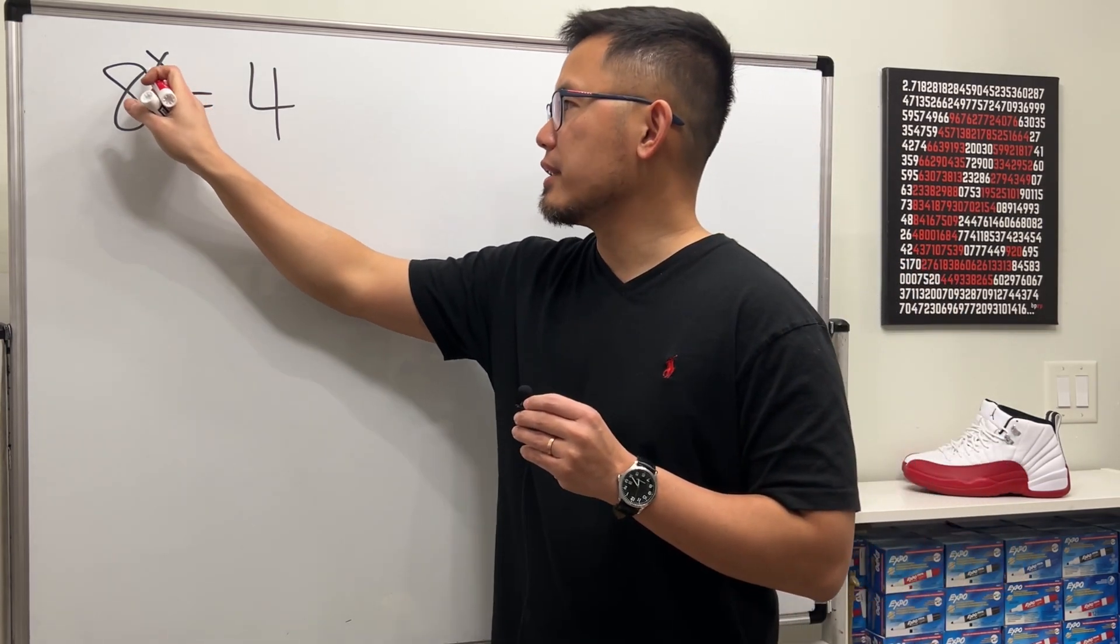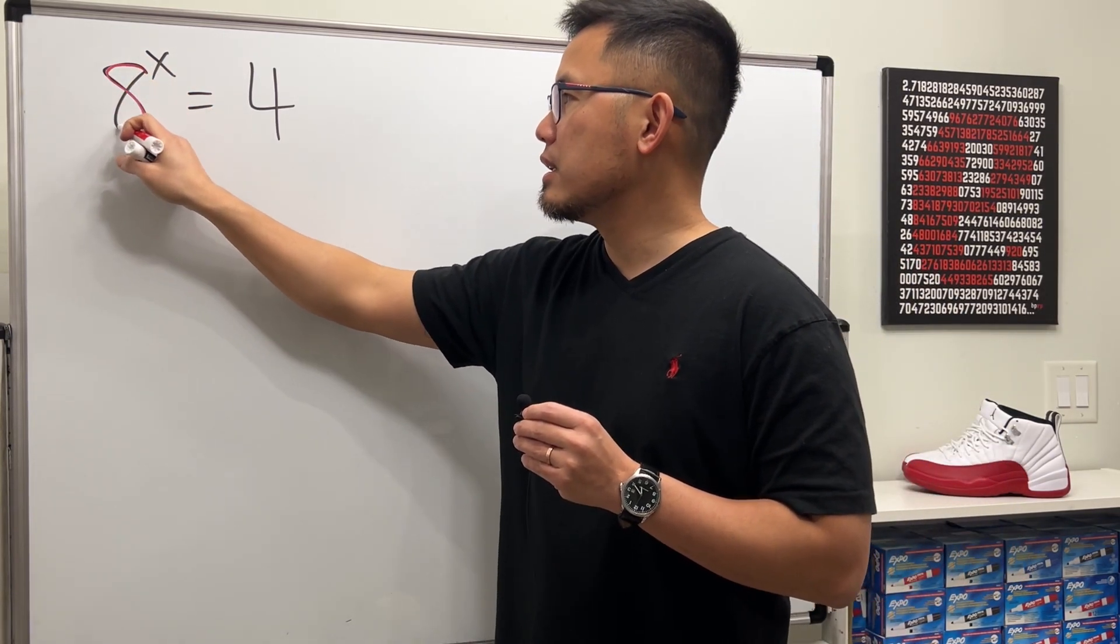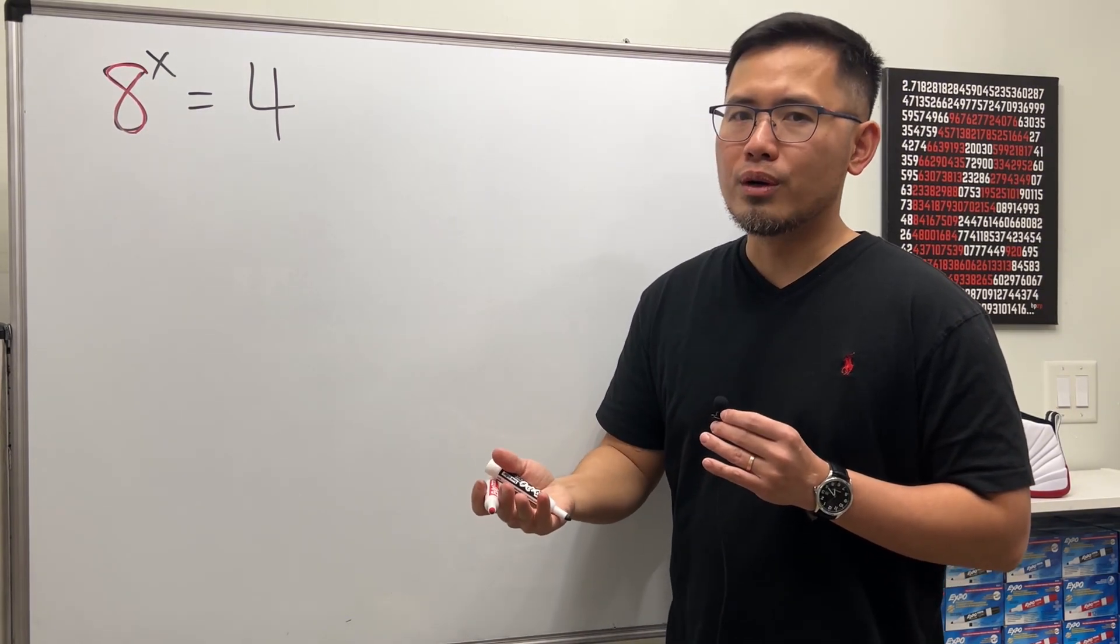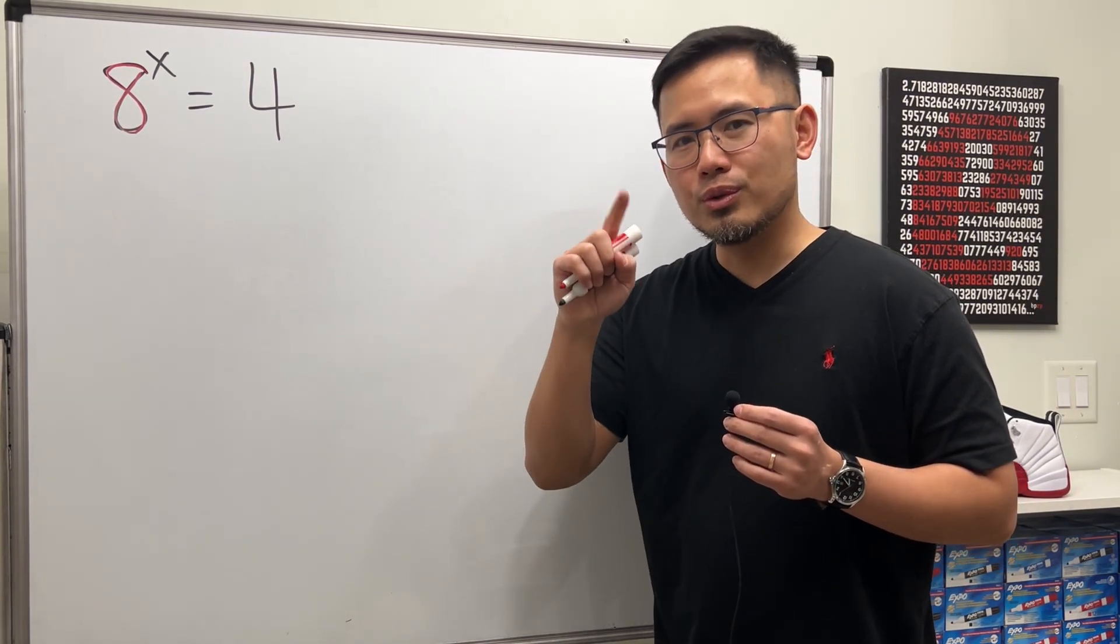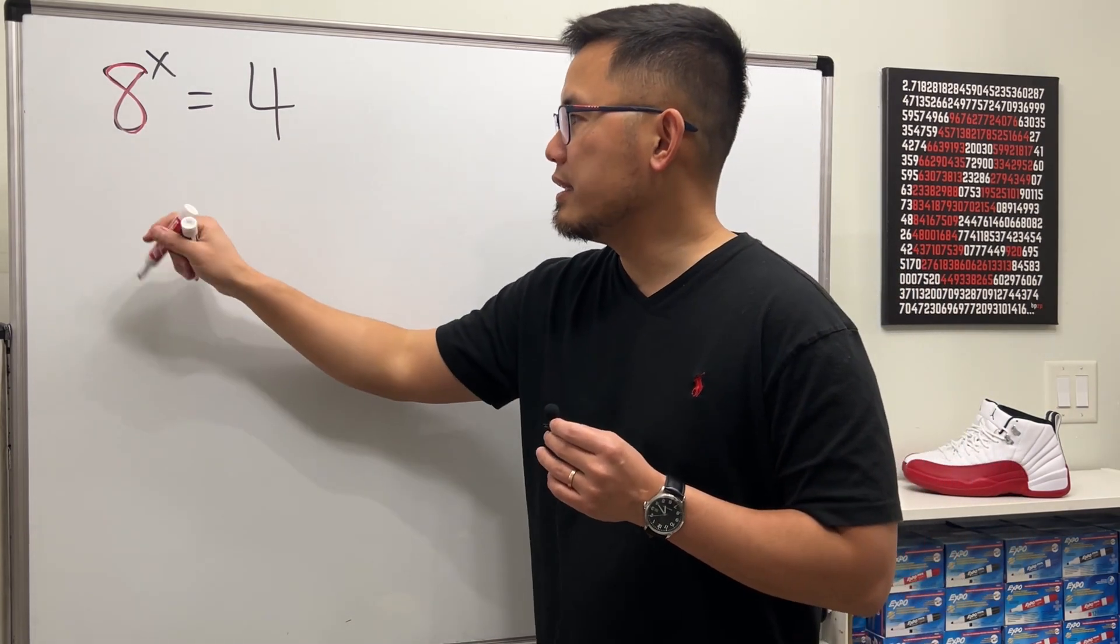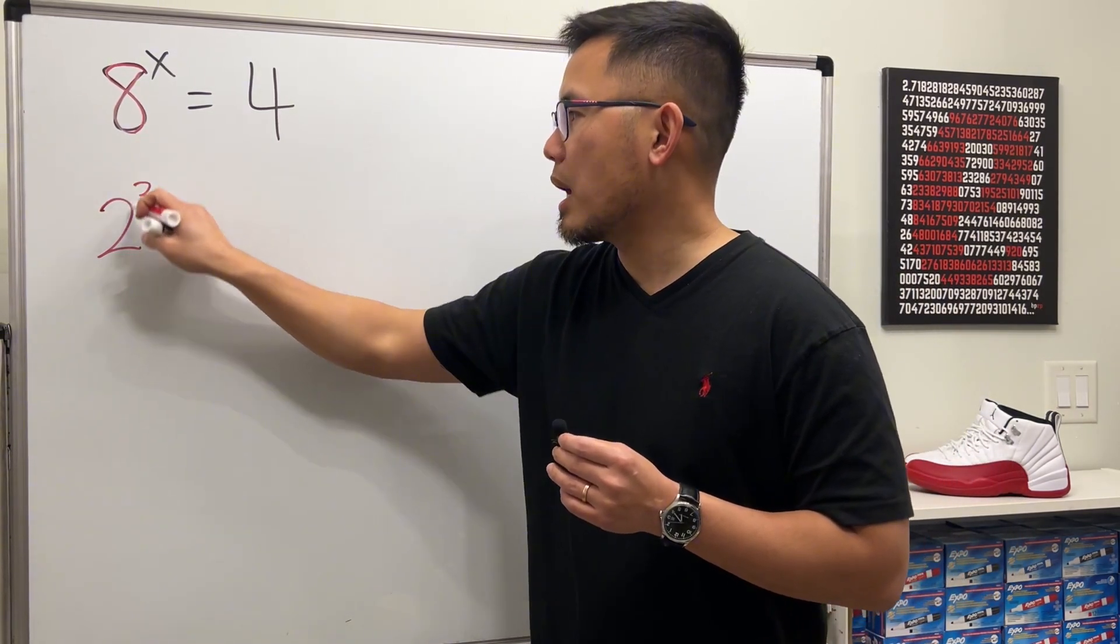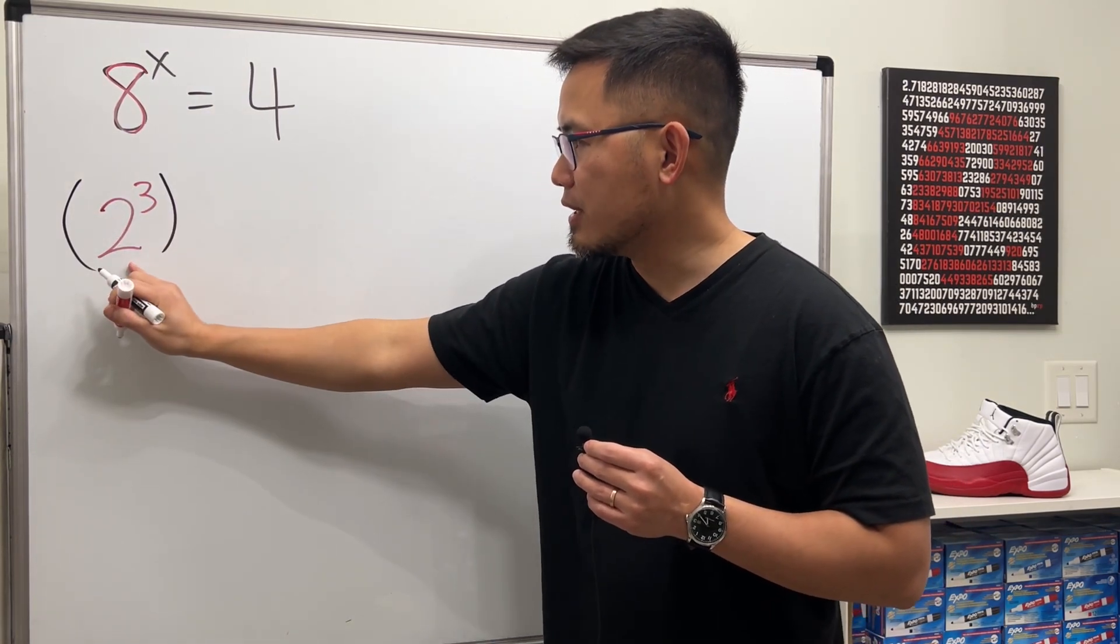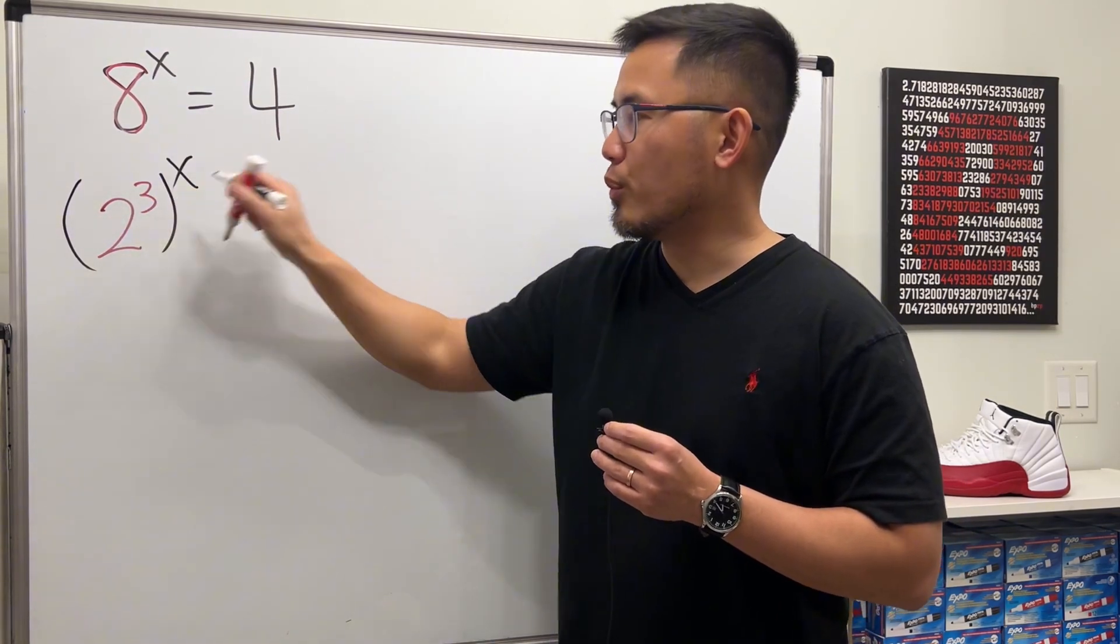Let's just focus on the 8 first. Can we rewrite that into a power? And I'll tell you yes, because we know 2 times 2 times 2 is equal to 8, so we can write the 8 as 2 to the third power. And then don't forget we still have this right, that's for the 8, and then raise that to the x power.